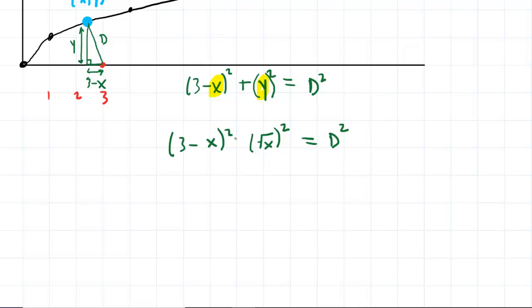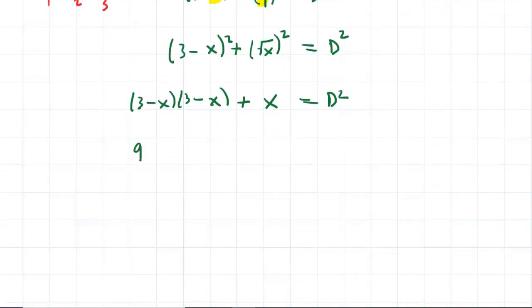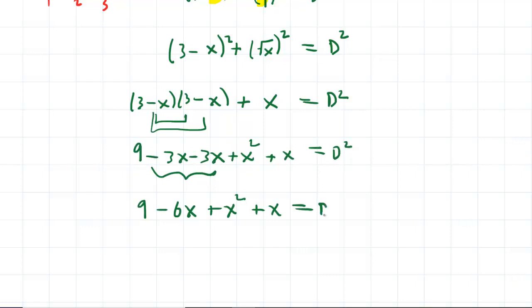We're going to want to simplify this equation. So the square root of x squared, if we simplify that, that just gives us x. The (3 - x)² we can foil that out, as they say. So (3 - x) times (3 - x). And as we multiply that out, we'll do 3 times 3, which gives us 9. 3 times negative x is a negative 3x. 3 times negative x, again, is negative 3x. And then we have negative x times negative x, which is positive x². Continuing on simplifying, we can combine these like terms here. This will give us 9 - 6x + x² + x. And then, indeed, we have these like terms right here. So putting this all together, we're going to have 9 - 5x + x². And this will give us our distance squared.